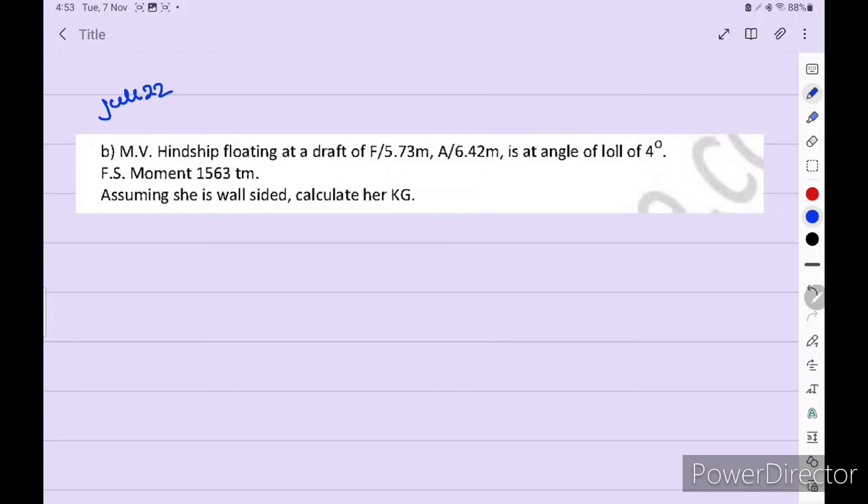FSM, free surface moment is 1563. Assuming she is well sided, calculate her KG. Okay. So let's see how they solve. We have the forward draft. Forward draft, 5.73 meters. We have aft draft, 6.42 meters.